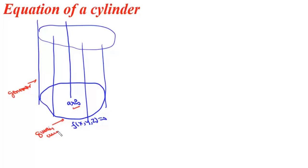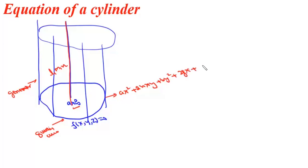Now we'll find the equation of a cylinder. Suppose the direction ratios of the axis are L, M, and N, and suppose the equation of the guiding curve is Ax² + 2HXY + By² + 2GX + 2FY + C = 0, with Z = 0, that is, lying entirely in the XY-plane. Now since the direction ratios of the axis are L, M, and N, the direction ratios of the generator will also be L, M, and N.